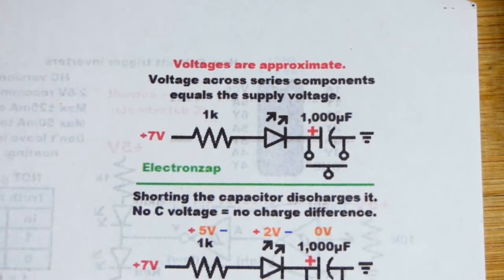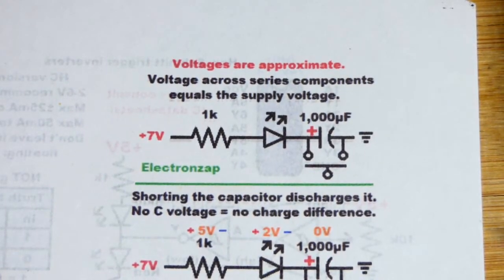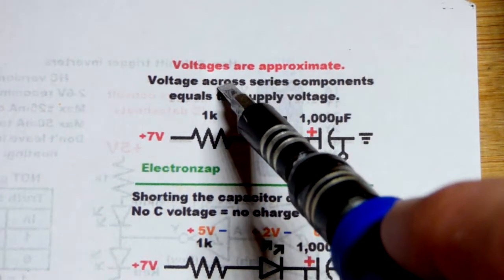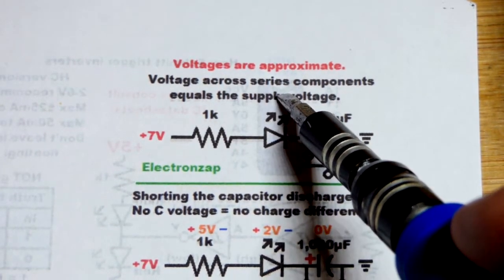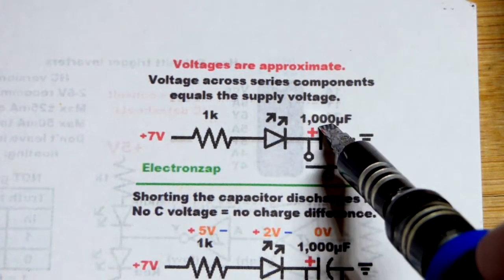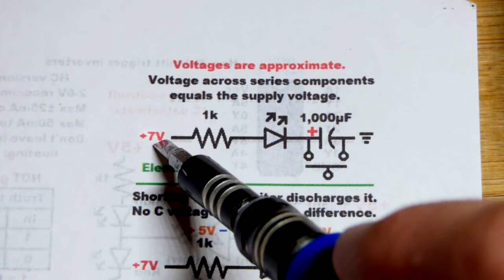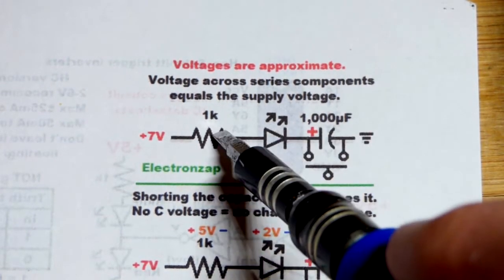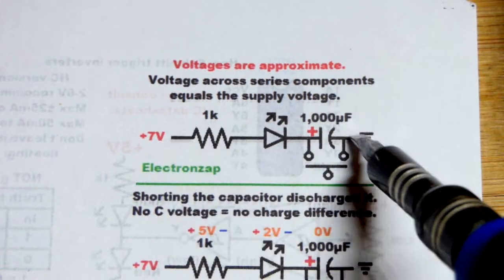In this video, we're going to do some demonstrations. First we're going to look at the schematic of voltages across series components. The basic rule is when you have components in series, the voltages across them will equal the total voltage across all of them. The voltage across each of them will add up to the total voltage.